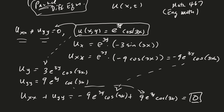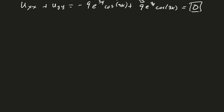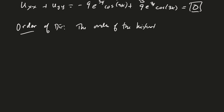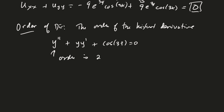A bit more vocabulary: the order of a differential equation is the order of the highest derivative. For example, y double prime plus y y prime plus cosine of 3t equals 0 — the order is 2. Our partial differential equation is also second order because the two derivatives appearing are both second derivatives.